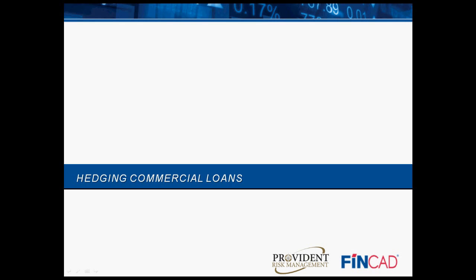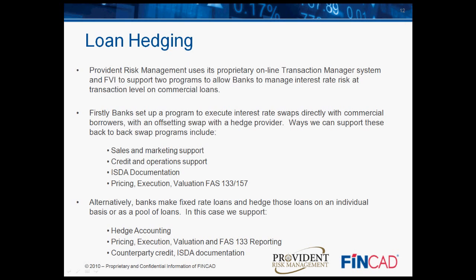At Provident Risk Management, we do a lot of work to support hedging programs for commercial loans. We use FinCAS Fair Value Insight and our own transaction manager system to support two hedging programs. Firstly, we support programs where banks use a back-to-back swap book to execute swaps with commercial borrowers, and then hedge the risk on those swaps with dealers or home loan banks. For those banks, we support sales and marketing, credit and operations, ISDA documentation, pricing, execution, and reporting. For banks making fixed-rate loans and hedging those loans individually, we focus on hedge accounting, loan documentation, pricing, execution, reporting, as well as ISDA documentation and counterparty credit risk.